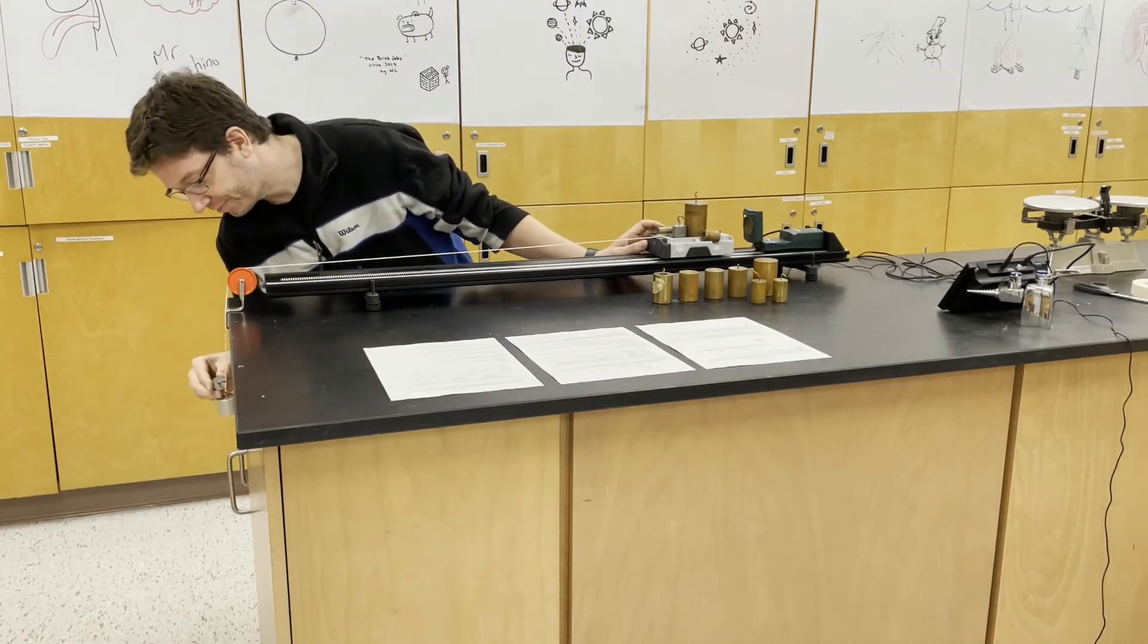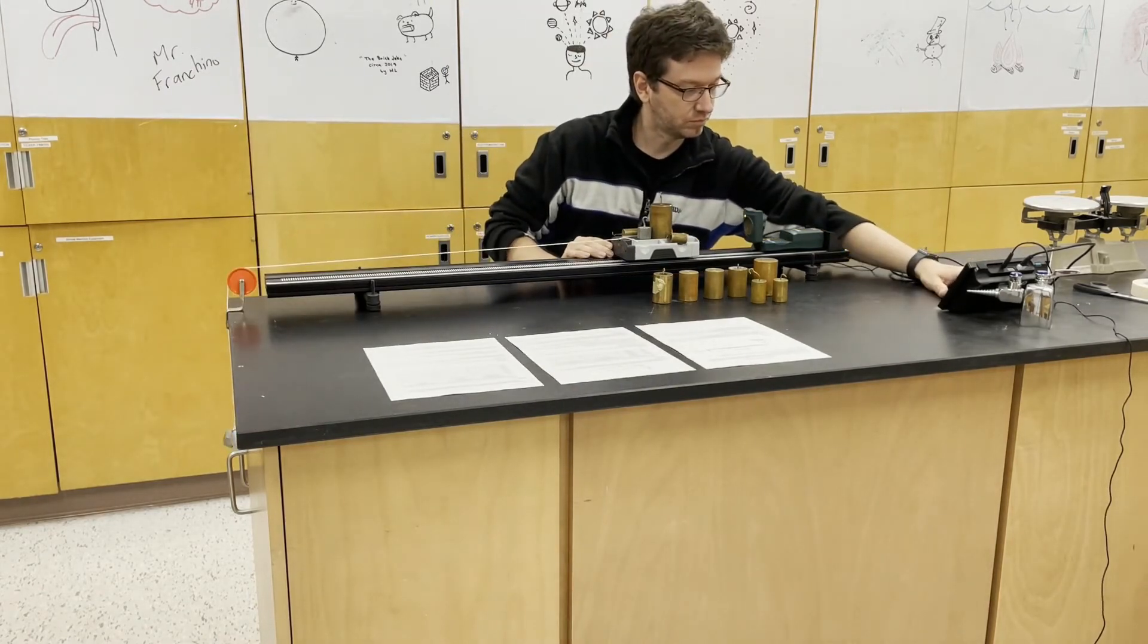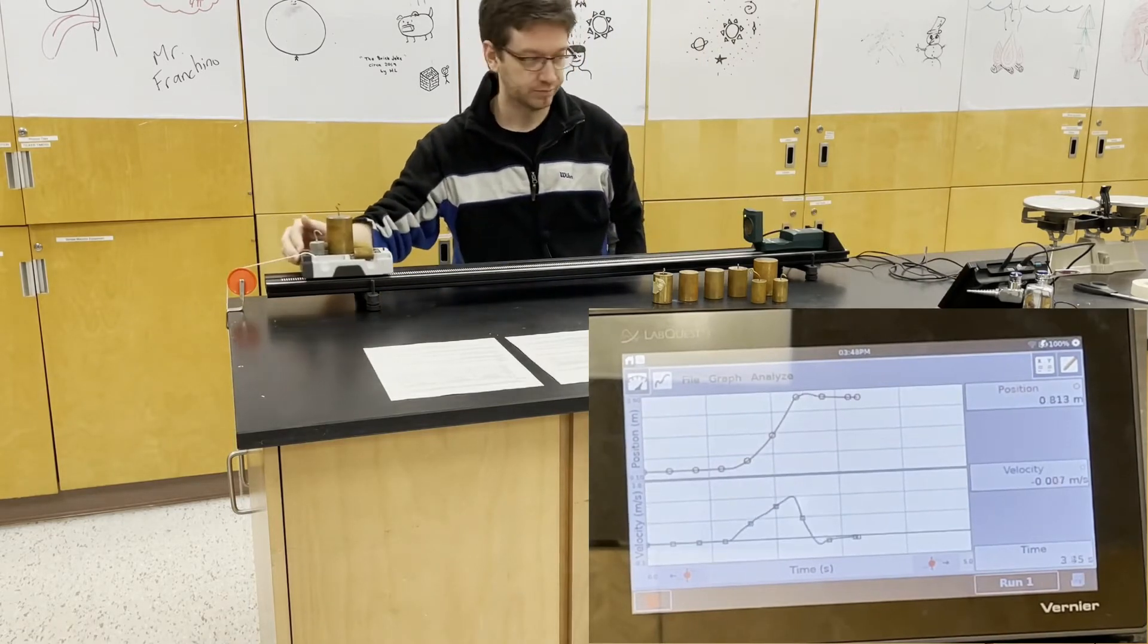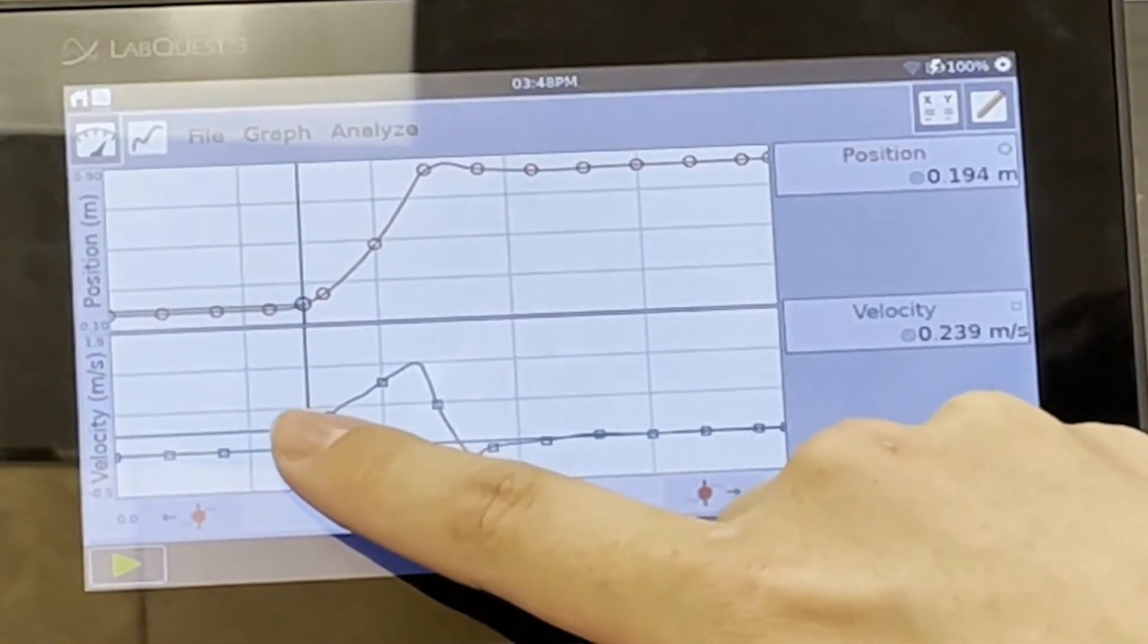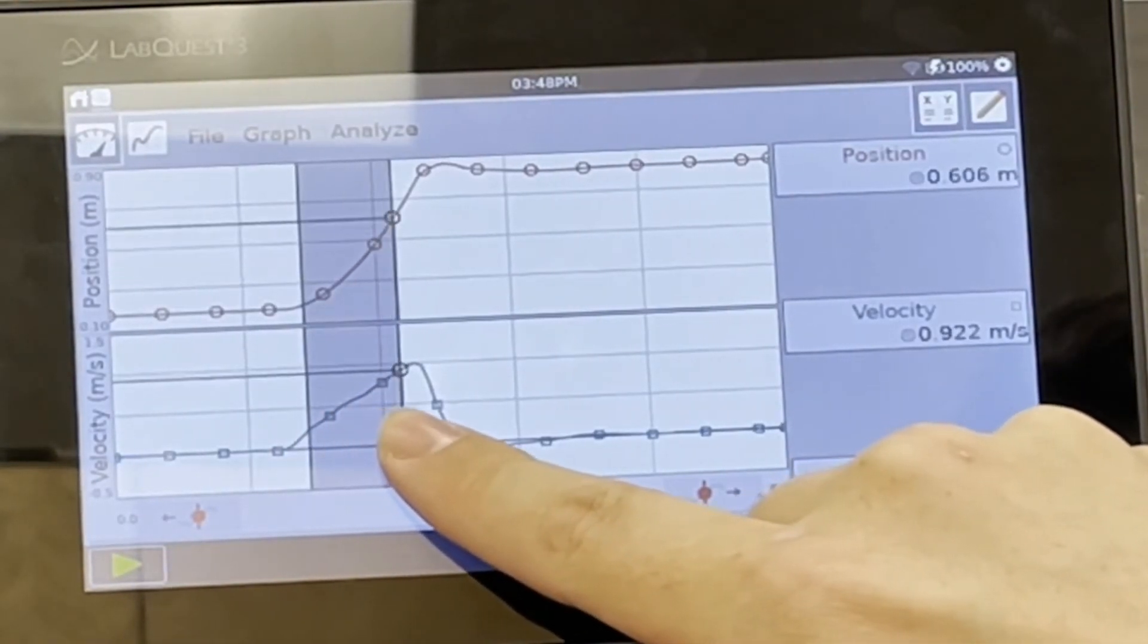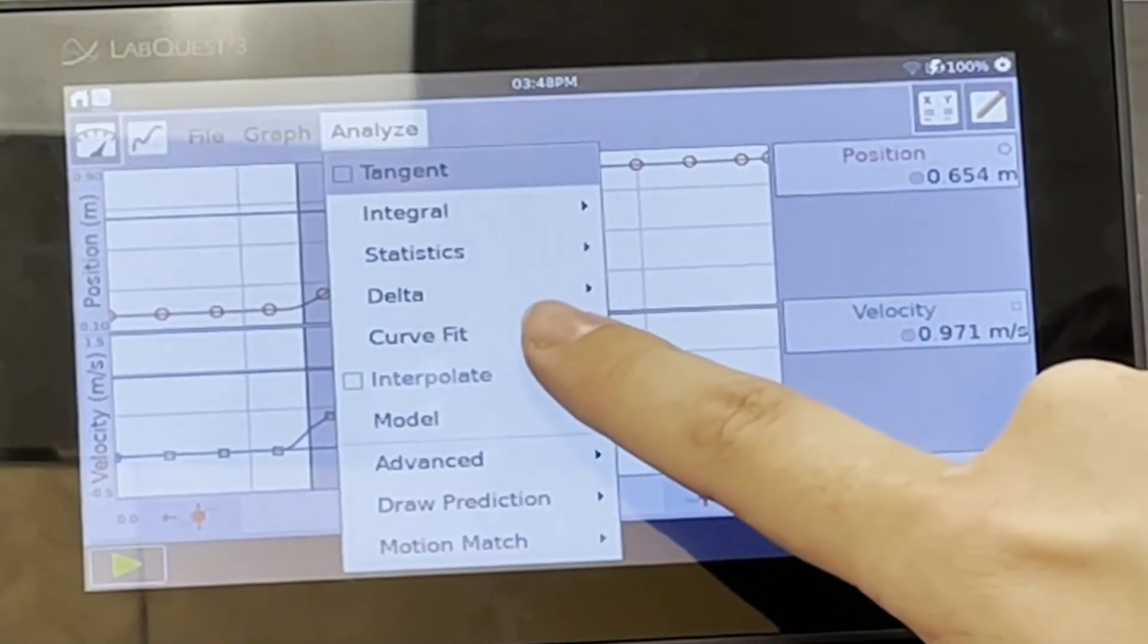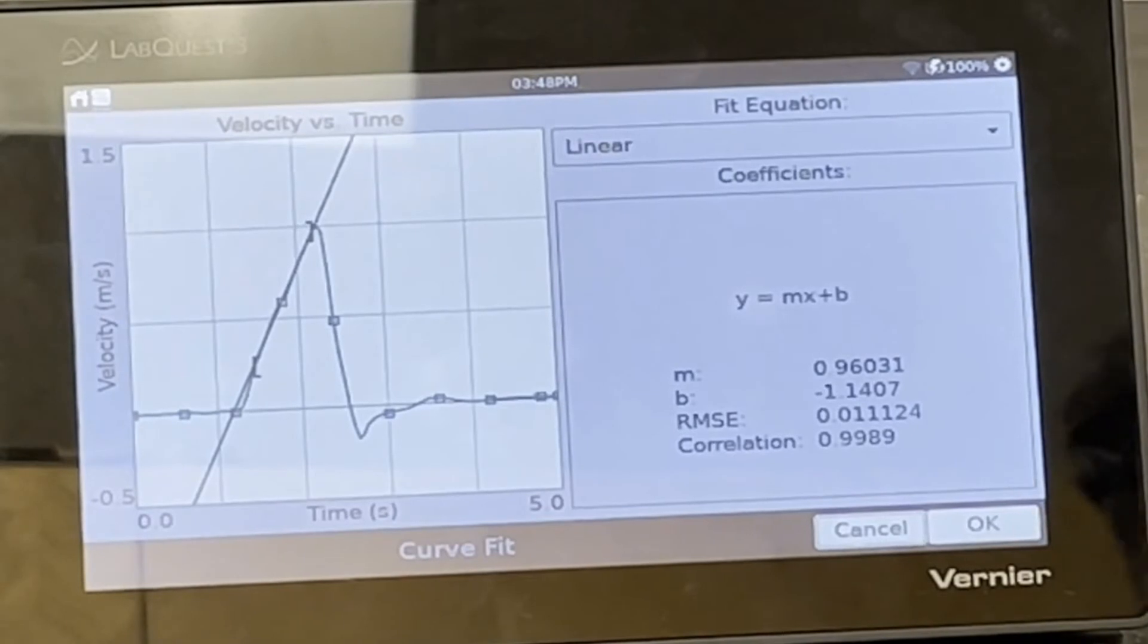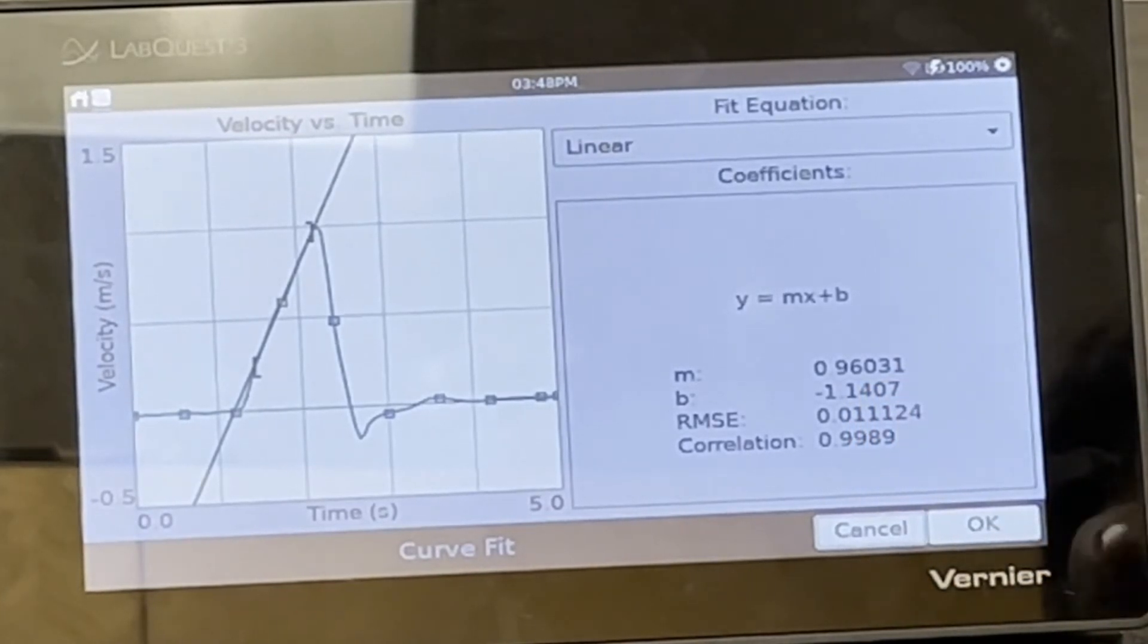Now 200 grams. So here, our acceleration is 0.96031 meters per second squared.